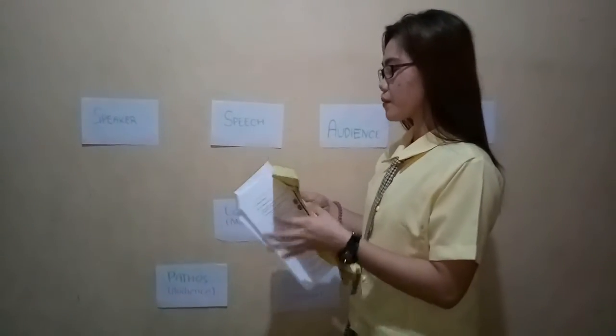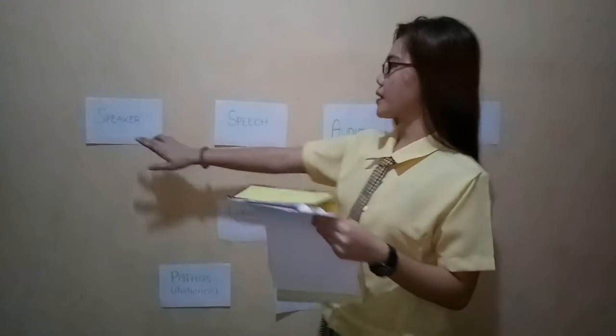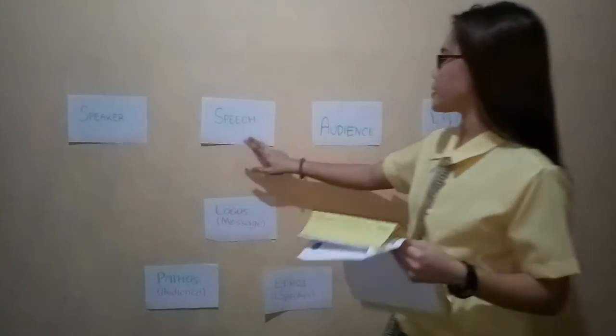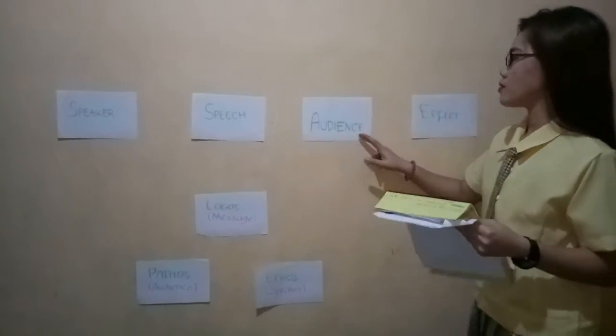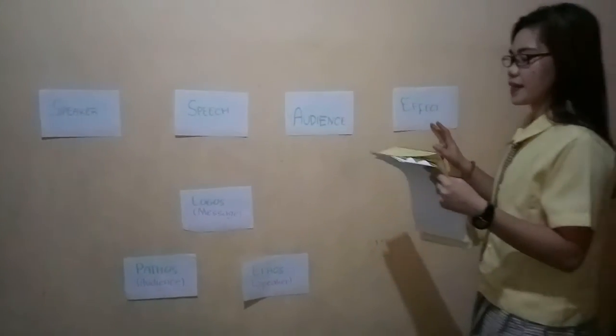Aristotle's model is composed of five elements: speaker, speech, audience, and effect.